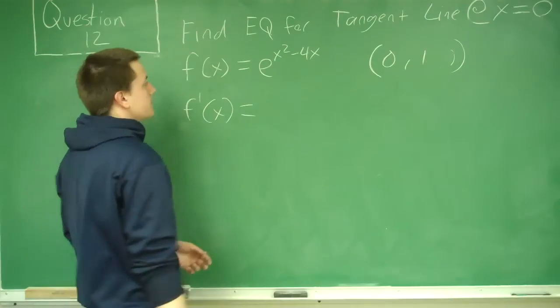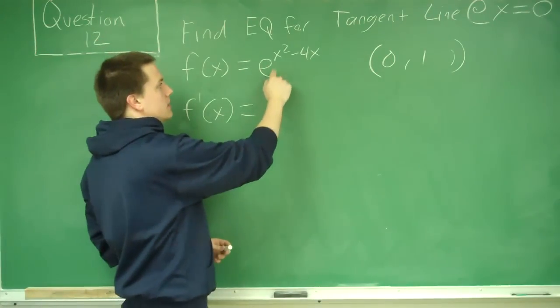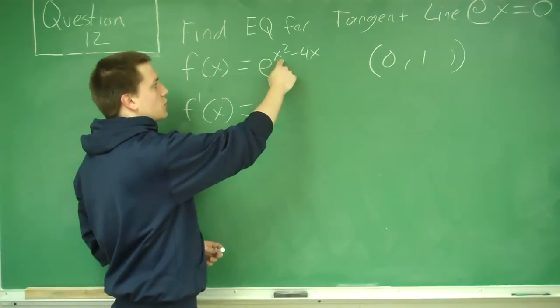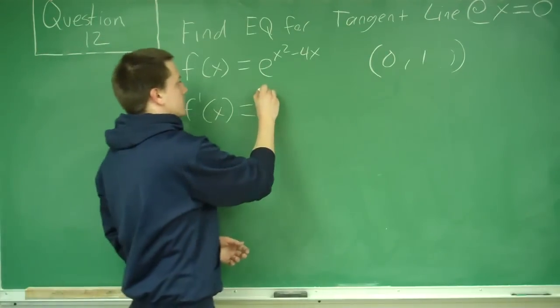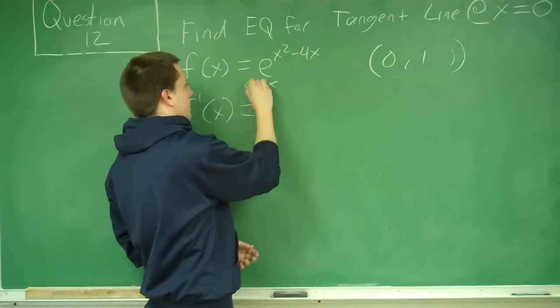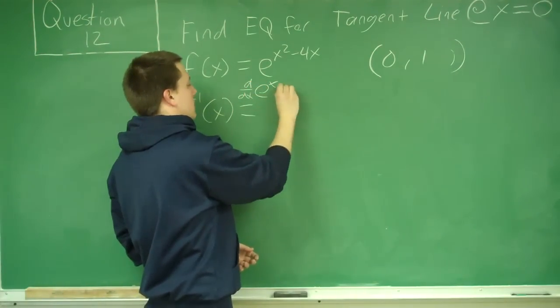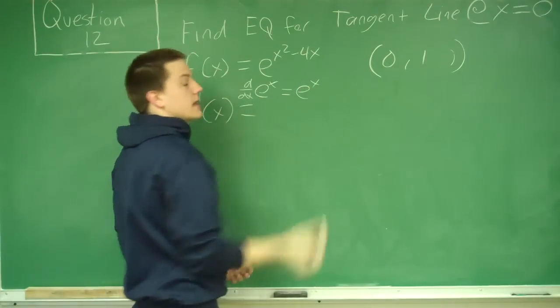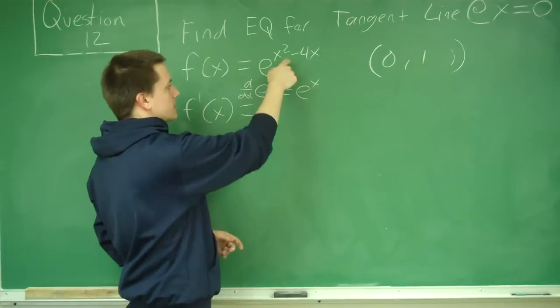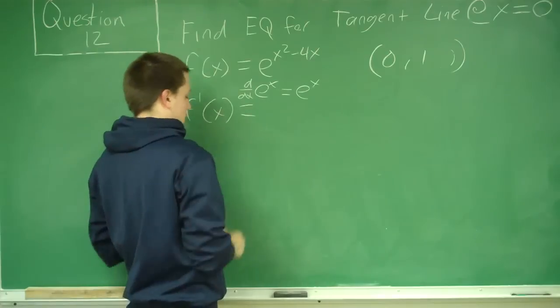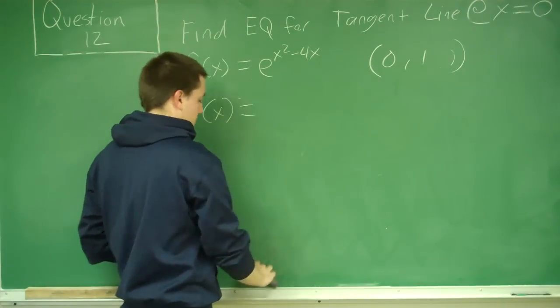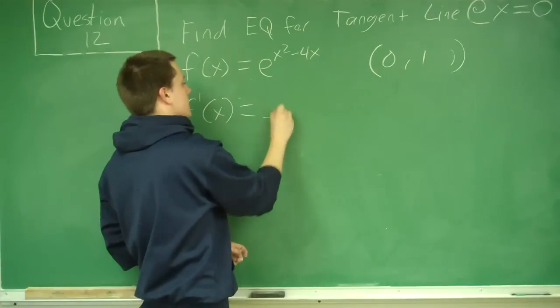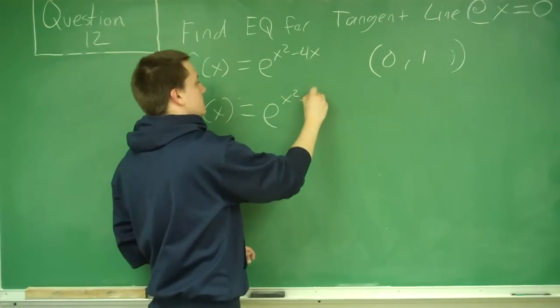We find our general derivative. What we have here is e raised to x squared minus 4x. The derivative of e to the x is just e to the x, so that means for any x the derivative is just e to the x. So what we have is e to the x squared minus 4x, so the derivative will be e to the x squared minus 4x.